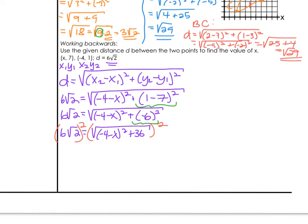If we square the left-hand side, that means we have to write this out twice. So 6 square root 2 times itself. On the right, if we square the entire square root, the whole thing just cancels out. And we still have that -4 minus x in parentheses, there's our detail, plus 36. But now there isn't a square root on the right-hand side.